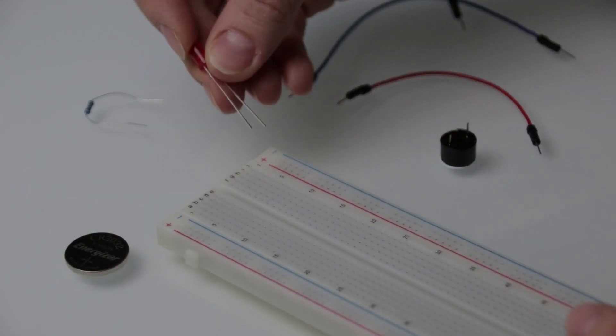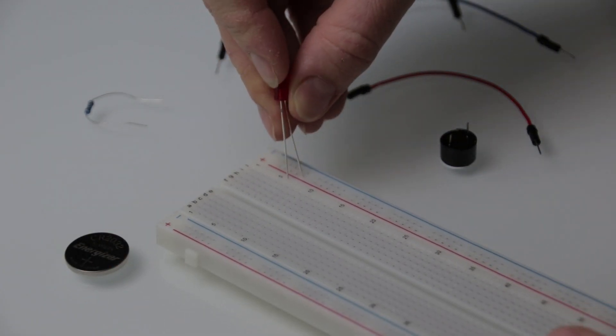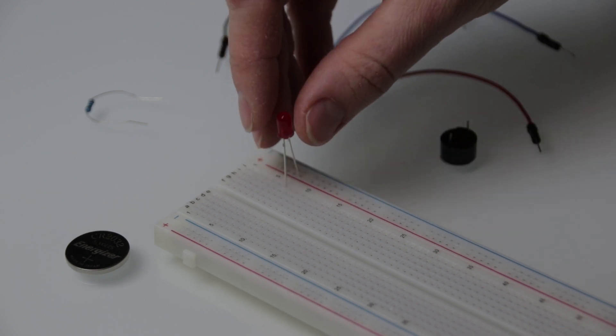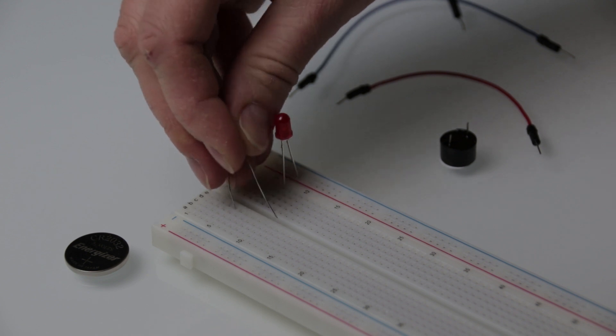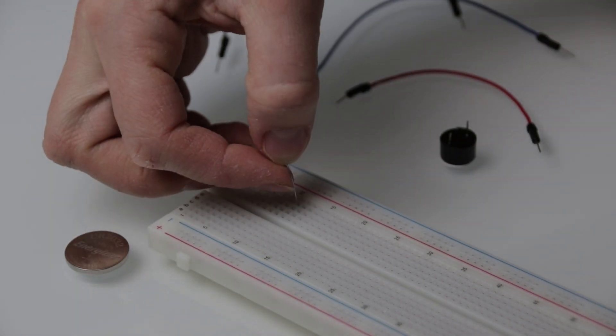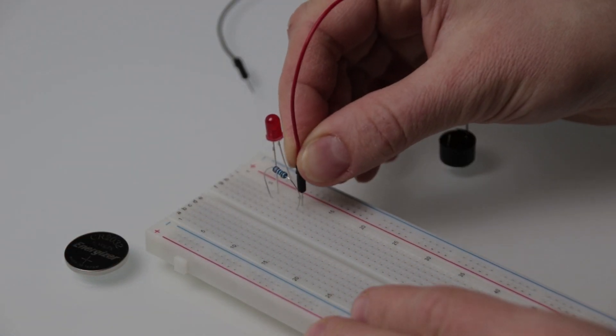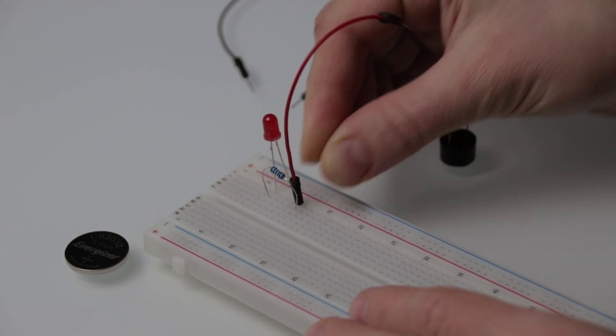I'm connecting positive, which is the longer lead of the LED, to the positive rail on the breadboard. Now I connect the negative LED lead to any side of the resistor. The other end of the resistor will go to the negative rail.